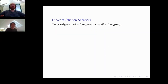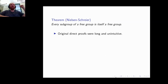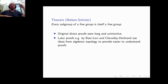I'll start by defining what the Nielsen-Schreier theorem is. It's a very simple sounding theorem: every subgroup of a free group is itself a free group. It kind of sounds very simple, but it's actually surprisingly tricky to prove. The original proofs by Nielsen and Schreier were quite long and somewhat unintuitive, but it turns out that the best way to understand what's going on is using ideas from algebraic topology.